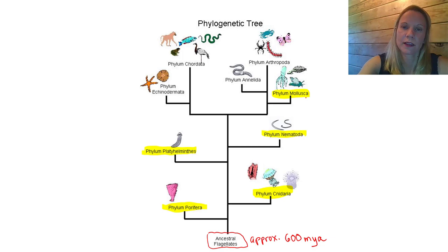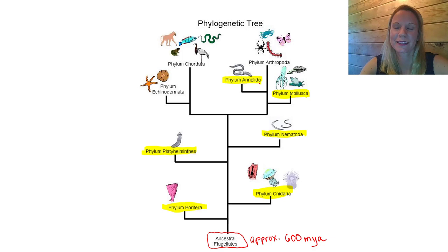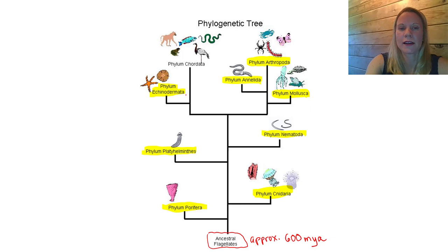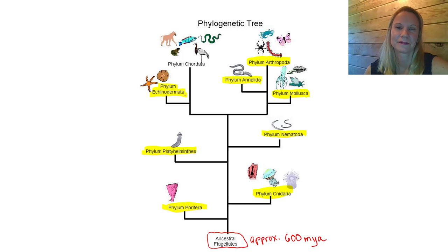Then we see the phylum Annelida - these are segmented worms like earthworms. Then we see the phylum Arthropoda - these are things like insects and crustaceans. Over here, going to the left, we see the phylum Echinodermata - the echinoderms are things like starfish and sand dollars. Lastly, we see the phylum Chordata.